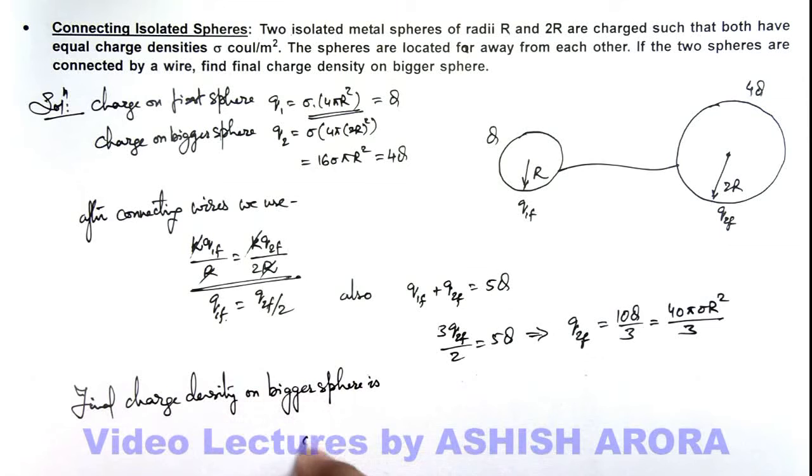So this can be given as sigma final on the bigger sphere is Q2final divided by its surface area, that is 4π(2R)², as 2R is its radius. So on substituting the values, you can see final charge is 40πσR² by 3, divided by the surface area which is 16πR².